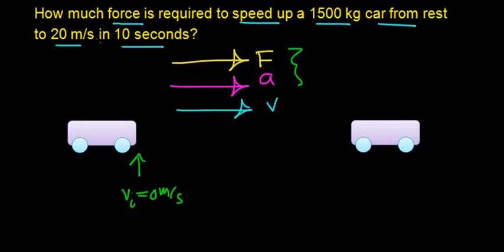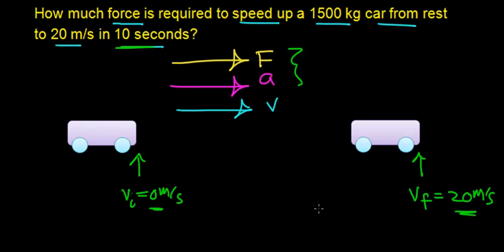After a time interval of 10 seconds, the car is going to reach a final velocity of 20 m per second. So it's going to take 10 seconds to go from rest to a final velocity of 20 m per second, and we can record that time interval as 10 seconds.